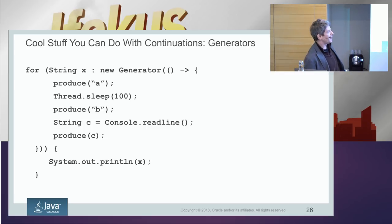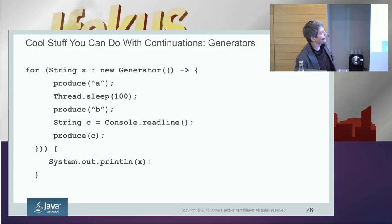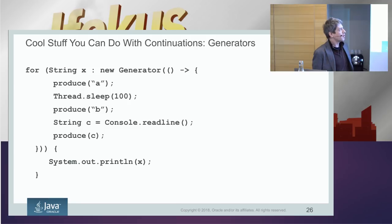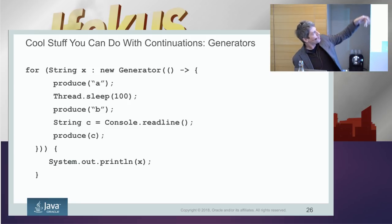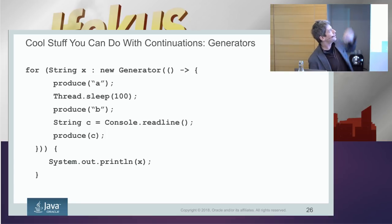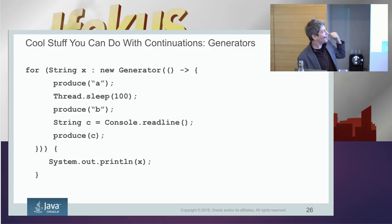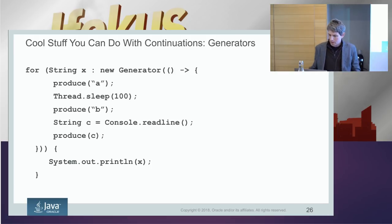Continuations themselves have some interesting uses — I think 99% of their benefit comes from fibers, but one use that isn't in fibers is generators. Generators are like iterables that are imperative. You loop over some collection generated on the fly by code that's allowed to sleep or call I/O. The collection is generated lazily — it blocks every time it produces, and every time you want to pull another element, that's when it continues. It won't call readline unless you ask for the third element.